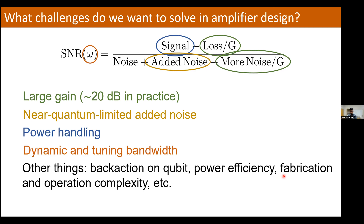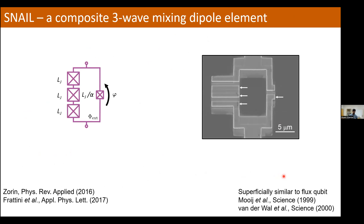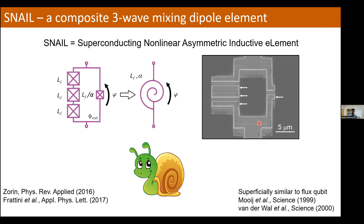I'm going to talk about a specific type of amplifier called the SNAIL parametric amplifier and show how we can engineer many of these characteristics. The SNAIL is an acronym representing a particular composite element consisting of a loop with three Josephson junctions on one side and a single smaller Josephson junction on the other side. This is an SEM micrograph showing the location of the various junctions built using the standard aluminum Dolan bridge process. This device turned out to be quite useful for many many experiments, and we gave it the acronym SNAIL standing for Superconducting Nonlinear Asymmetric Inductive eLement — in our field we like to name circuits after crustaceans, like the SQUID or the SLUG.